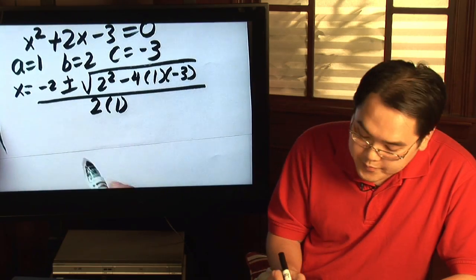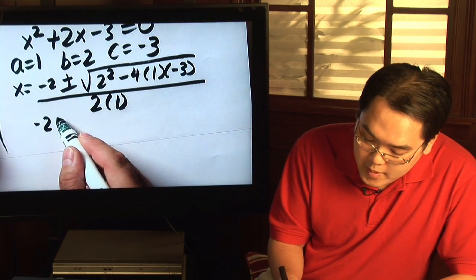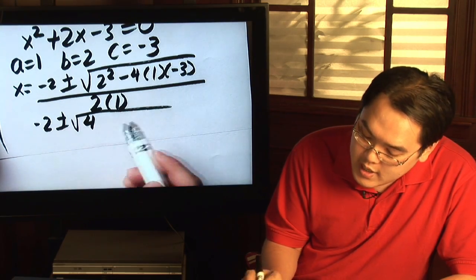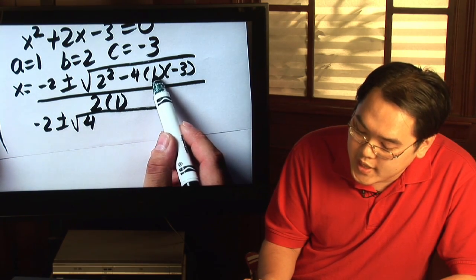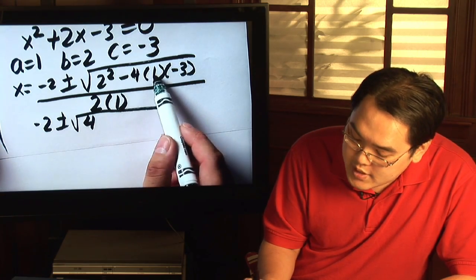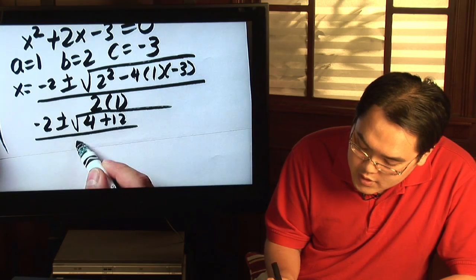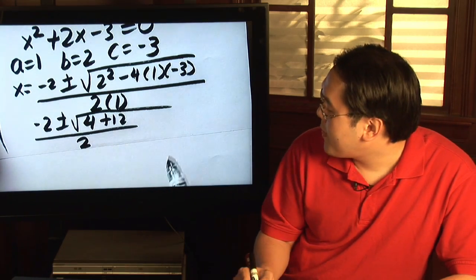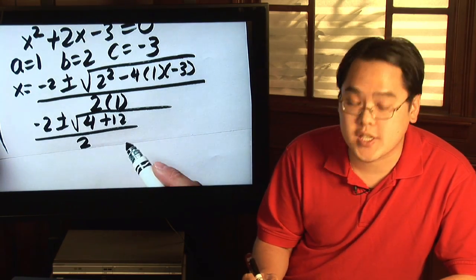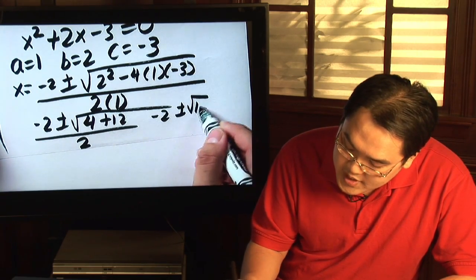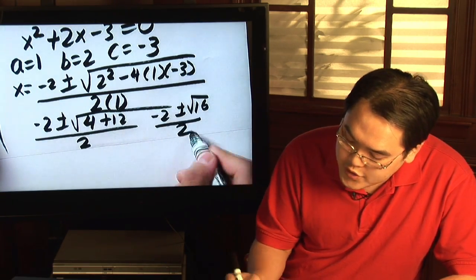You have negative 2 plus or minus square root of 2 squared is 4. Negative 4 times 1 is negative 4. Negative 4 times negative 3 is positive 12, over 2. Now, 4 plus 12 is going to give you 16, so you have negative 2 plus or minus square root of 16, all that over 2.